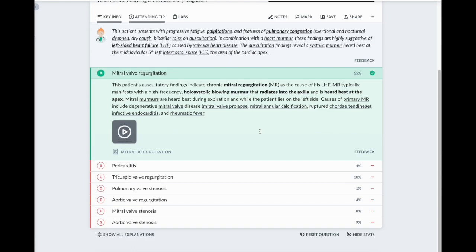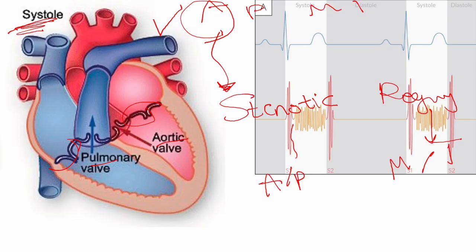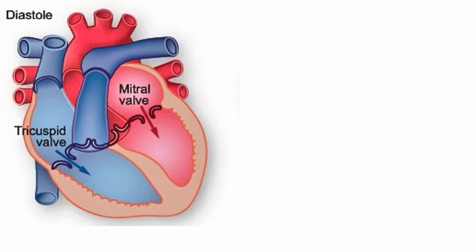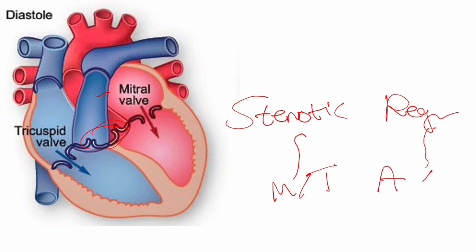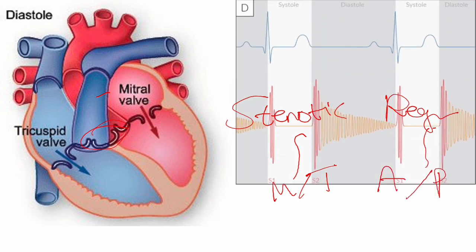So: where the murmur is and when it's heard tells me everything — I didn't even need to read the question. During diastole, which valves should open? The mitral and tricuspid valves open during diastole. So if they are stenotic, that will cause a diastolic murmur. Which valves should be closed during diastole? The aortic and pulmonary — so if they are incompetent or regurgitant, that will cause a diastolic murmur.